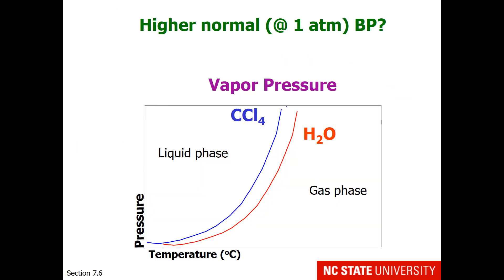This one asks which of these two liquids has the higher normal boiling point. As a reminder, this would be the boiling point at one atmosphere. So what we could do is find one atmosphere on the y-axis and then draw horizontal lines. We can see that the line intersects carbon tetrachloride first and water second, so water must have the higher boiling point. Water boils at 100 degrees at one atmosphere and carbon tetrachloride boils at 77 degrees at one atmosphere.